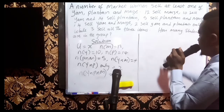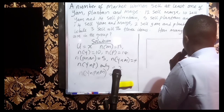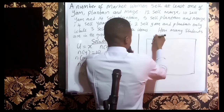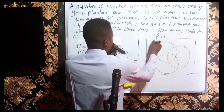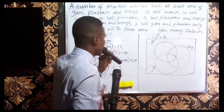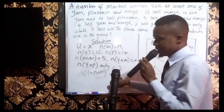Let us draw the Venn diagram. We have three sets — plantain, maize, and yam — drawn as three overlapping circles inside a rectangle. When tackling questions like this, you must begin from the three-way intersection. We are told 3 sell all three items, so we write 3 at the center intersection of all three circles.